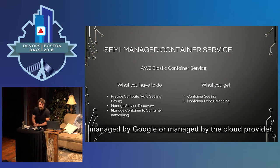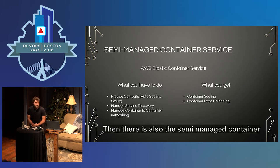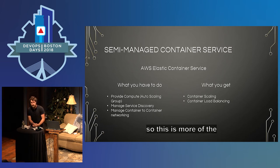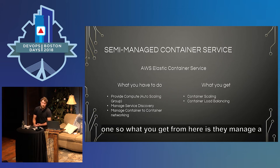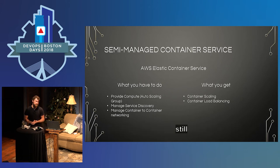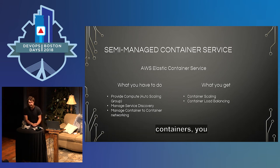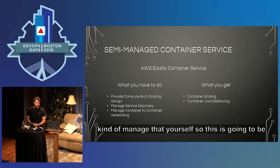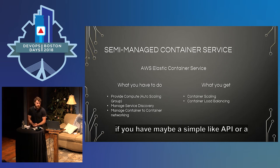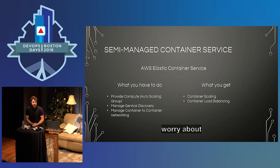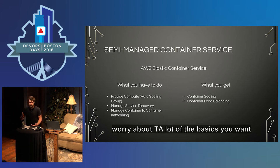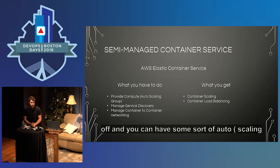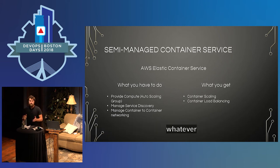There are also semi-managed container services — more like the legacy stuff from Amazon, specifically Amazon's Elastic Container Service (ECS), and Microsoft may also have one. What you get here is they manage a lot of the container scaling and load balancing, but you're still managing your compute. If you need to do anything more advanced — share information between containers or special configurations — you'll have to do that manually. This is useful if you have a simple API or a couple of containers where you just want hands-off scaling and can point to whatever load balancer Amazon provides.